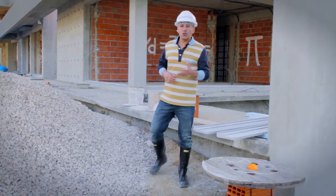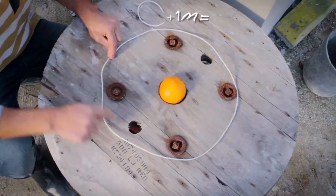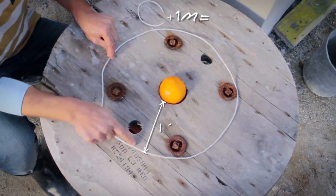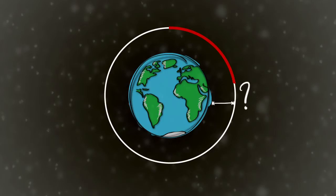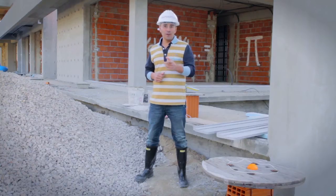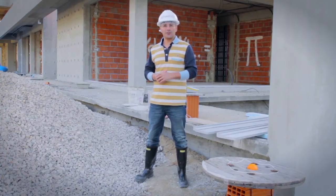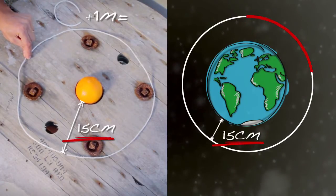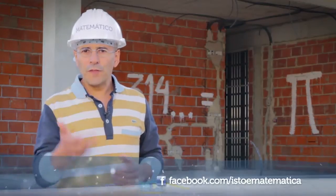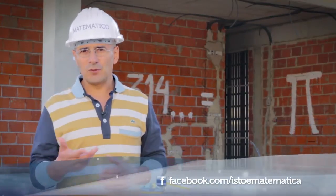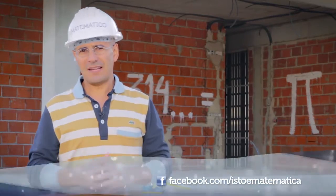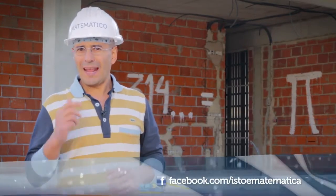And now, the answer to the initially raised problem. The gap between the string and the orange is around 15 centimeters. How much space is between the string and our planet? If your answer was 15 centimeters, you're right. Incredibly, the gap between the string and the Earth is the same as between the string and the orange. Why? Because the diameter of a circle is equal to its circumference divided by pi, regardless of size. And this is math.